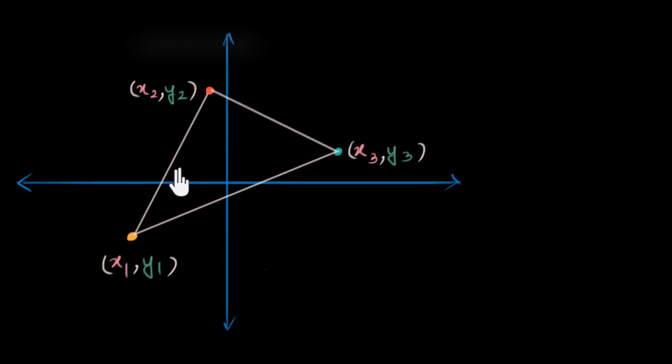Now my first instinct was to check if it's easy to find the base and the height because if it is then I'll just find the length of the base and the height and then half into base into height. I know how to do that but over here the sides are not like horizontal or vertical so it's not very easy to find the base and the height. Okay so that method is not possible directly.